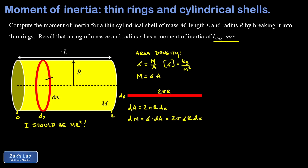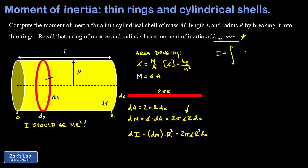The next thing is to write down the total contribution of this thin ring to the moment of inertia, which we call dI. Here we use the formula for the moment of inertia of a thin ring — it's just the mass multiplied by the square of the radius. So dI equals dm times R², and substituting our expression for dm gives 2π·sigma·R·dx times R², which gives 2π·sigma·R³·dx. The contribution to the moment of inertia from this one thin ring is written entirely in terms of x. We can now use integration to add up all these contributions: I equals the integral of dI = 2π·sigma·R³·dx from x equals 0 to L.